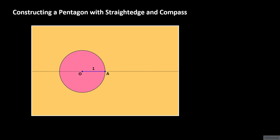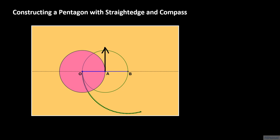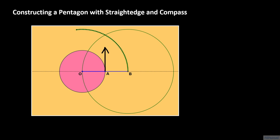Next, we construct the line perpendicular to the x-axis through the point A. To construct this perpendicular line, we center our compass at the point A and construct a circle of radius 1. Besides at the origin, the circle intersects the x-axis at a second point, which we call the point B. We use segment OB for the radius of our compass and construct a circle of radius 2, this time centered at B. We then construct a circle of the same radius, but this time centered at O. There should be two points of intersection between these two circles. We call these two points, points C and D.